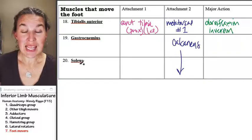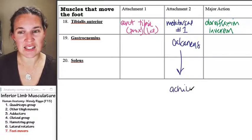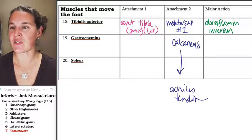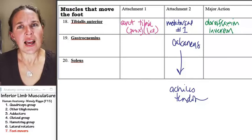Both gastrocnemius and soleus attach to the calcaneus via the Achilles tendon. That's an interesting fast fact. And they are on the posterior aspect of your leg.